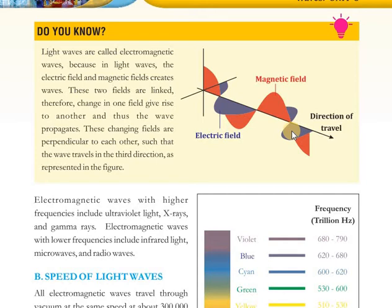So electromagnetic waves with higher frequencies - اور light wave میں دونوں ہی fields create ہوئی, اور یہ link ہیں ایک دوسرے کے ساتھ۔ One field gives rise to another, اور اس طرح یہ wave propagate ہوتی ہے۔ اور changing fields جو ہیں, وہ ایک دوسرے کے perpendicular ہیں۔ یہ دیکھیں - اس کا جو angle ہے, اس کے 90 degrees پہ یہ دوسری field ہے۔ اور wave جو ہے, وہ travel کر رہی third direction میں۔ یہ دیکھیں - magnetic field کی یہ direction ہے, electric field کی یہ direction ہے, اور direction of light traveling یہ ہے, which is represented in this figure.